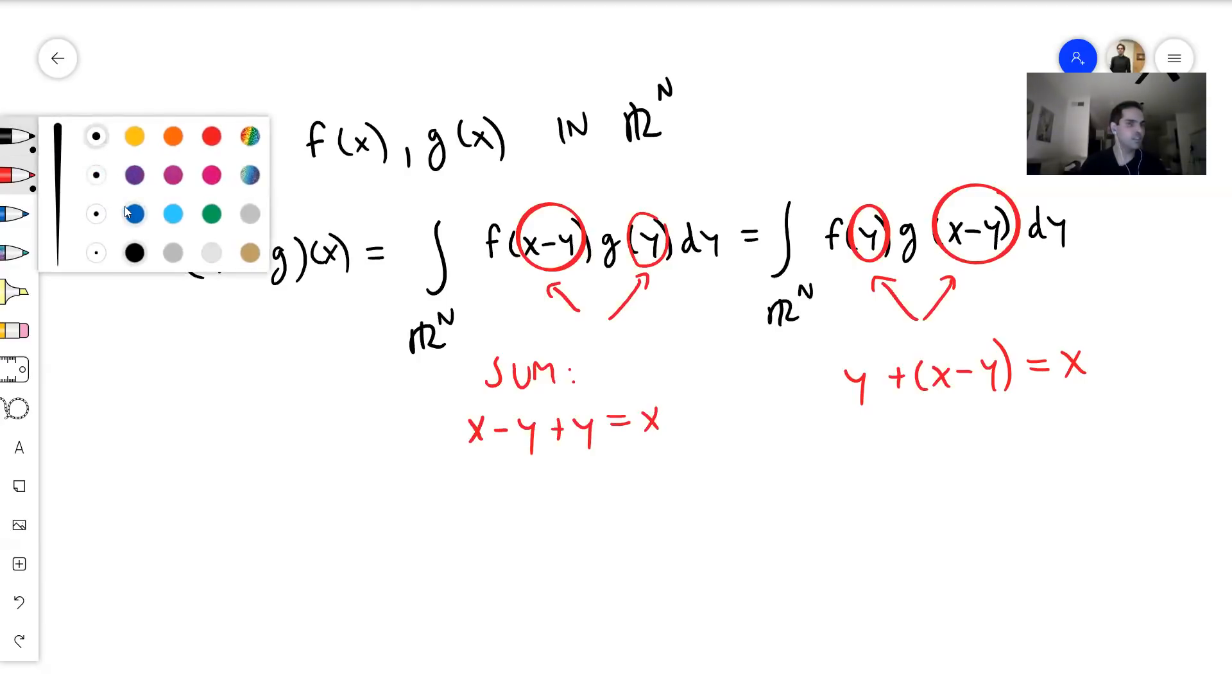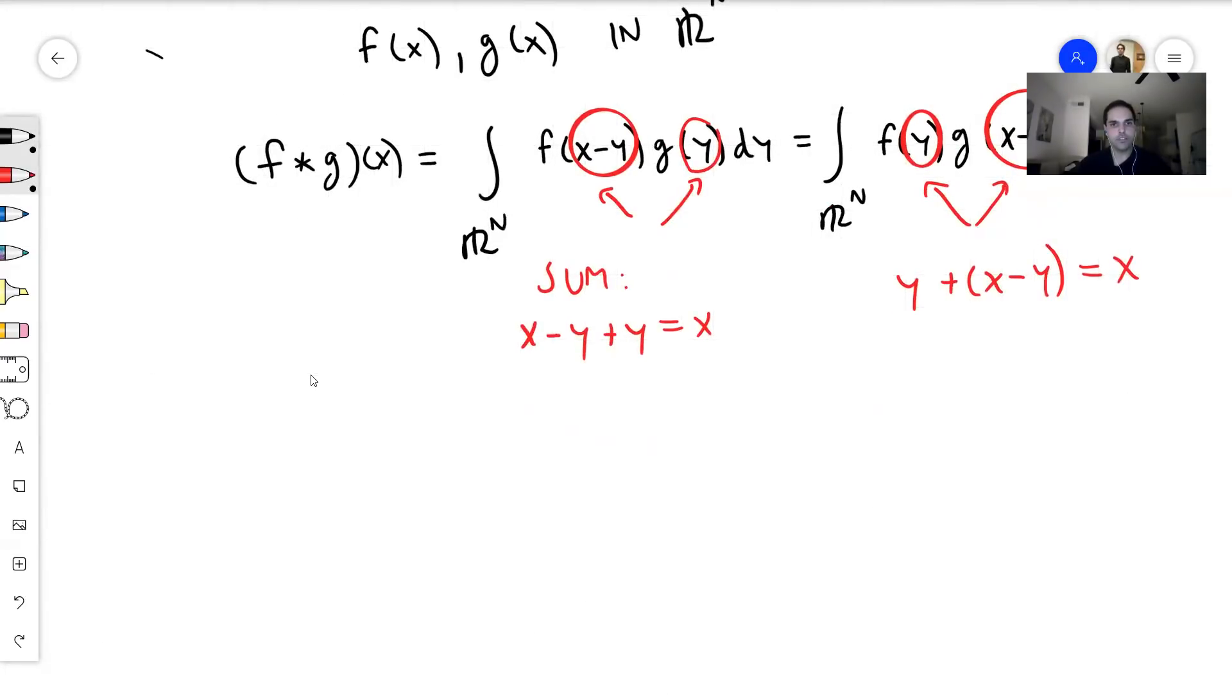So for instance, consider the following. In R, for n equals 1, consider f(x) being the indicator function of (0,1), which is just the function that is 1 on the interval (0,1) and 0 elsewhere.